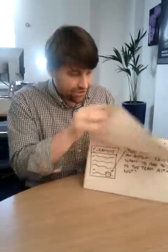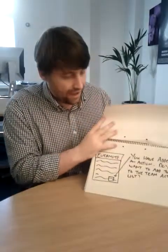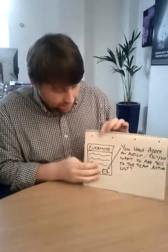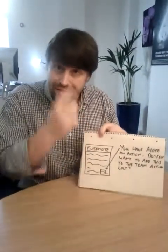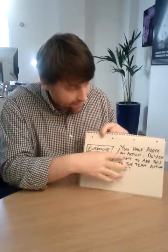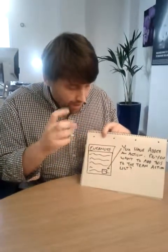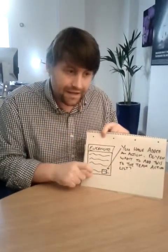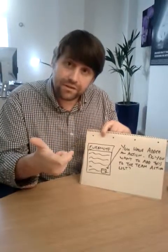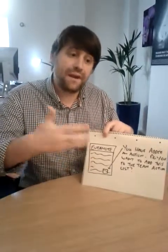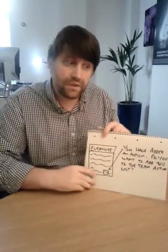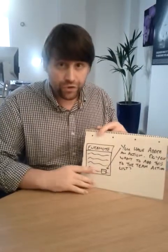Similarly, with actions, the rule can be set to recognise when an action has been added. It says 'action' or something along those lines, and it can say: OK, this seems to be an action — do you want to add this to the team action list? The team can then benefit from having a shared action list and a shared to-do list, which can be monitored over time.